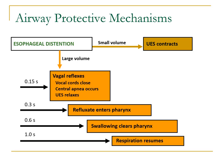The upper esophageal sphincter will relax — because if it closes, this would lead to rupture of the esophageal sphincter, and this happens within 0.15 seconds. After that, the refluxate enters the pharynx, and either those contents will be swallowed again, clearing the pharynx, or spat out, after which respiration resumes.